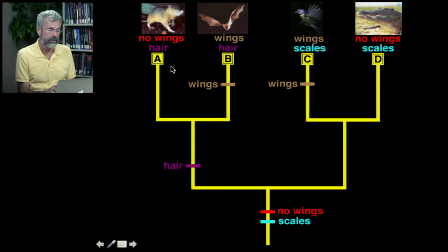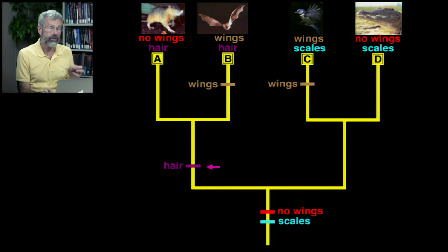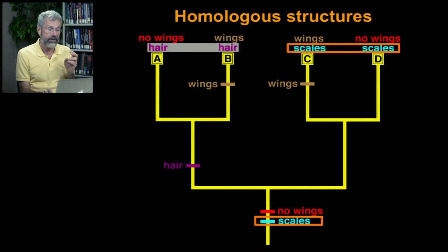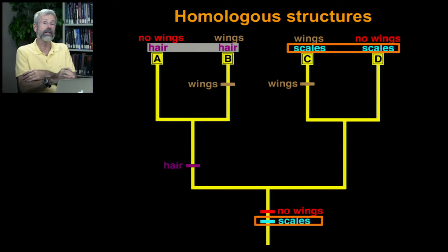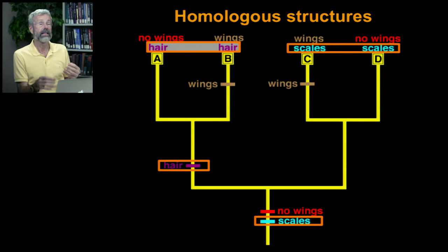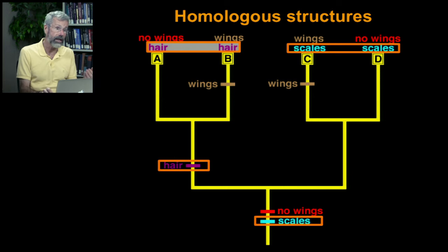Neither the shrew nor the crocodile have wings. Both the shrew and the bat have hair; both birds and crocodiles have scales. Everything we know about vertebrate evolution tells us that hair evolved just once, so hair is a homologous structure in mammals. Scales were the ancestral condition and are still retained by common ancestry in both birds and crocodiles — birds have a few scales on their legs, feet, and around their eyes, while crocodiles are covered in scales. Hair evolved just the one time in the ancestor to all modern mammals, and so all modern mammals have hair by common ancestry — these are homologous structures.